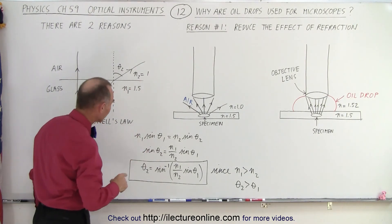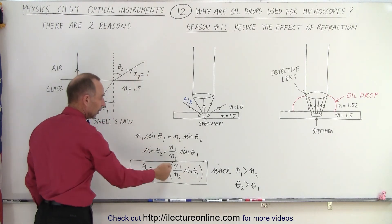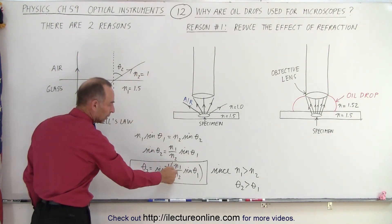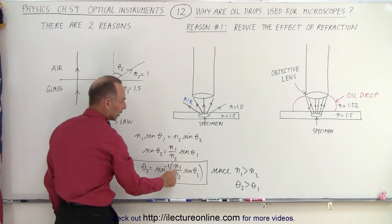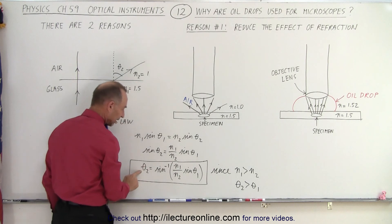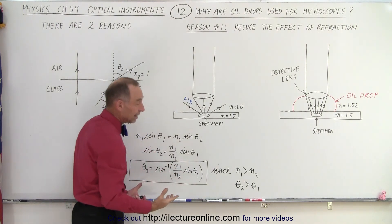Let me go back. So realizing now that n1 is larger than n2, so this fraction is greater than 1, multiply times the sine of theta1, which means that if n1 is larger than n2, then theta2 will be larger than theta1. And that's the whole idea.